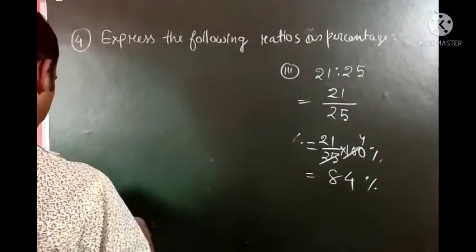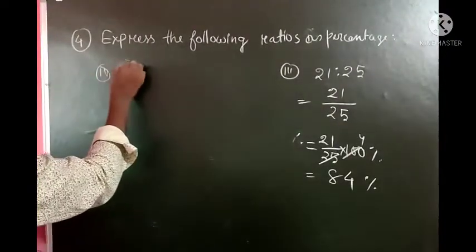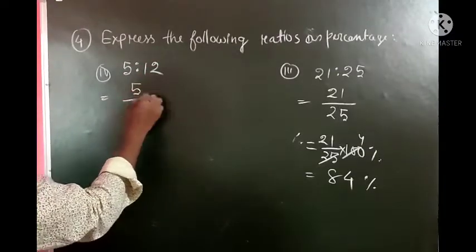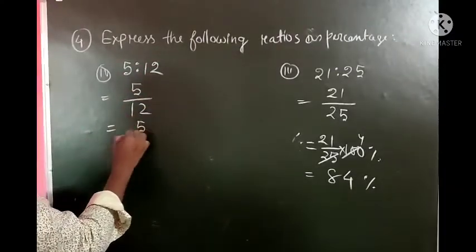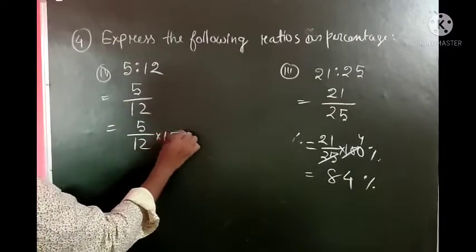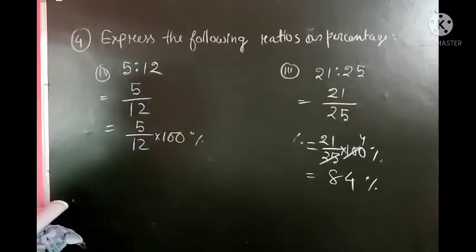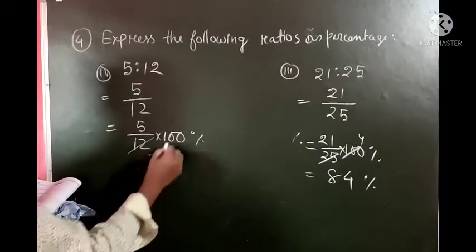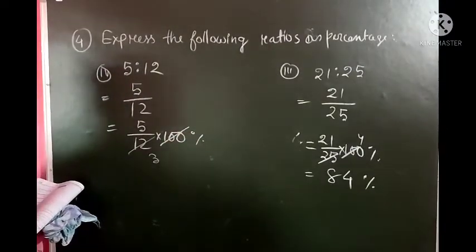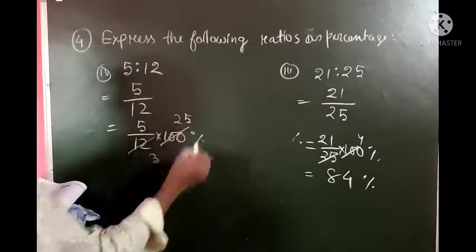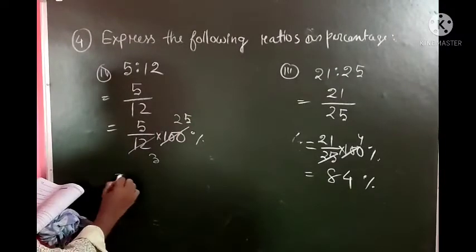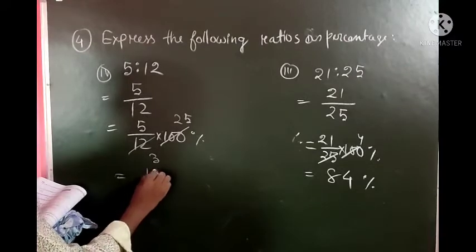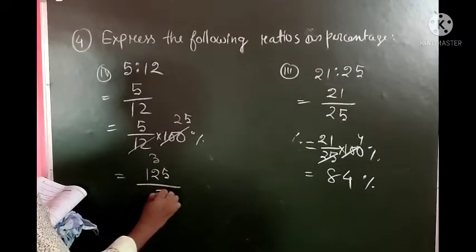So next question: 5 is to 12. So 5 is to 12 means 5 by 12. So 5 by 12 into 100 percent. So 4 times 25 is 100 and 4 times 3 is 12. So 5 into 25 is 125 divided by 3, which gives 41 and 2 by 3 percent.